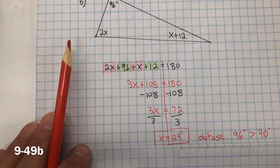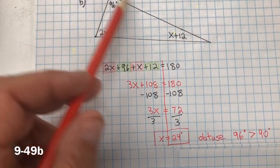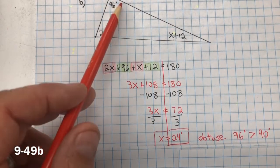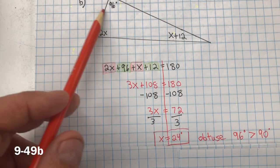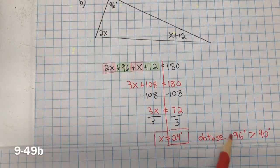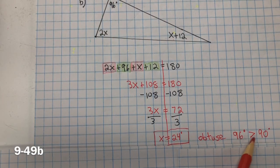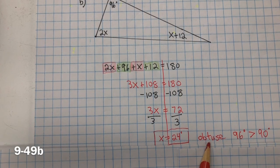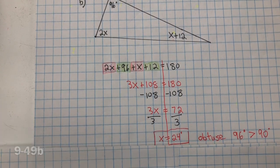If we go back up to our equation, I mean our triangle, we see that the greatest measure is 96 degrees. And since 96 is greater than 90 degrees, it's an obtuse angle. So, I mean, an obtuse triangle.